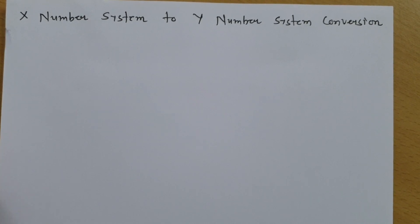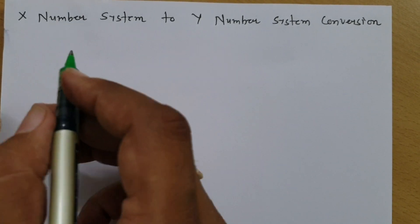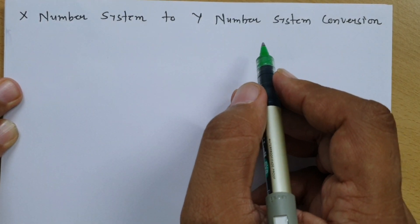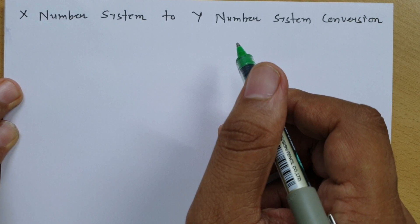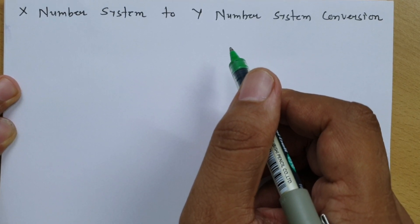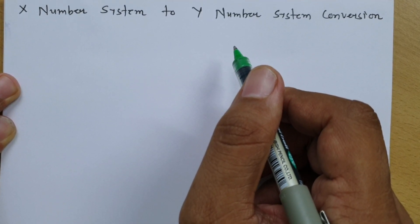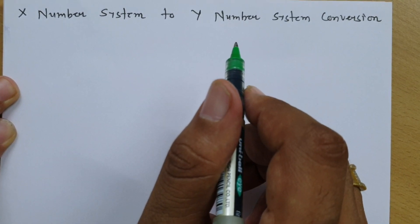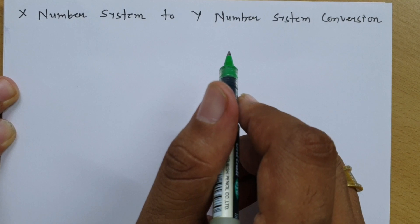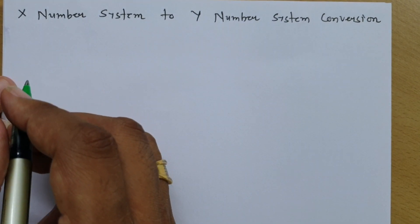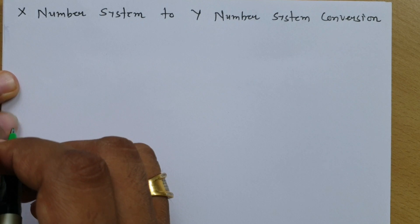Welcome to the digital electronics lecture series. In this session I will explain X number system to Y number system conversion. In my previous videos I have already explained different number conversions for different systems. Here, even if the systems given are not well-known, we can still convert them. I will explain this through some examples to make it more clear.